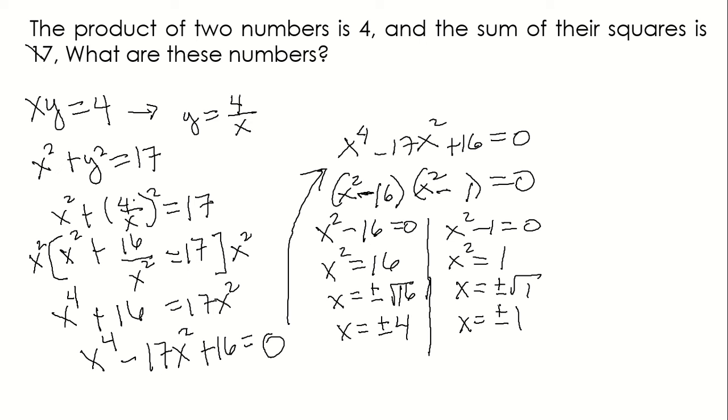If we're going to get the value of y, we'll use this equation, y equals 4 over x. Since we have four values of x: x equals 4, negative 4, 1, and negative 1. Let's start with x equals 4. Using y equals 4 over x, that's 4 divided by 4, so the answer is 1. So this is 4, 1.